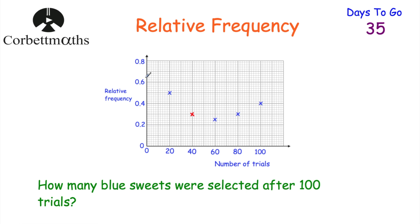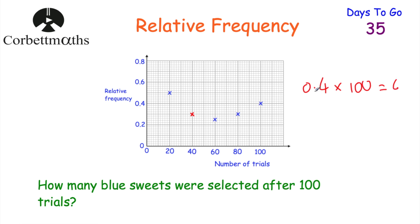The next part asks: how many blue sweets were selected after 100 trials? Looking at the graph, the relative frequency at 100 trials is 0.4. We multiply that by the number of trials: 0.4 × 100 = 40. So there were 40 blue sweets taken out after 100 trials. Well done if you got that.